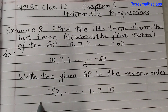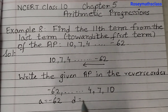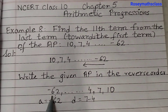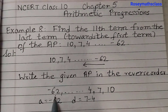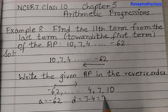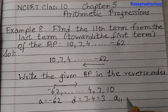Now the first term A is minus 62. To find the common difference, we take these two terms: 7 minus 4 — be careful, it is 7 minus 4, not 4 minus 7, because minus 62 is now the first term and 10 is the last term. That equals 3.